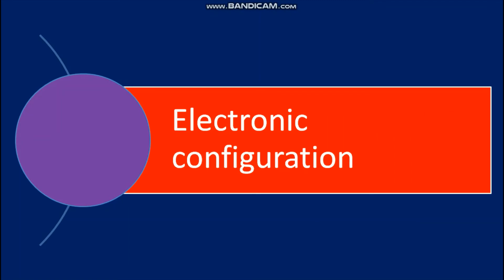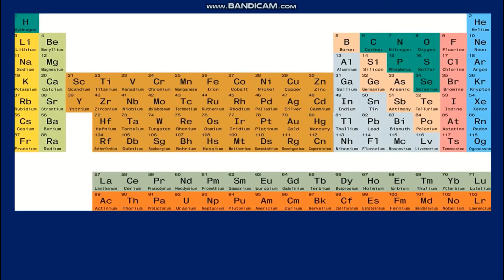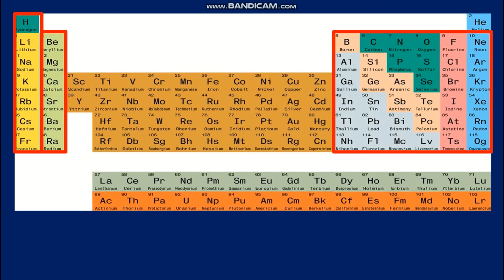Electronic configuration. For the electronic configuration, the first thing we need to do is find the number of electrons in the element, and we use this number to find the electronic configuration. Looking at our periodic table, every element in group 1 ends in S1, and every element in group 2 ends in S2. Moving to the P block on the right side, all elements end in P1 through P6 from left to right — so boron is P1, carbon P2, nitrogen P3, and so on.